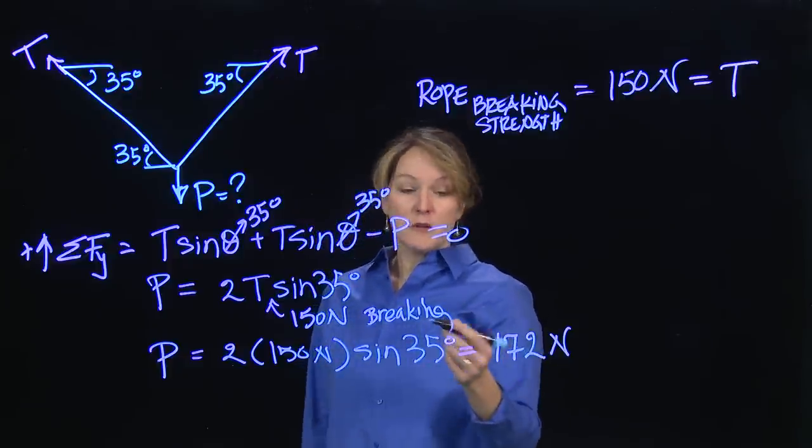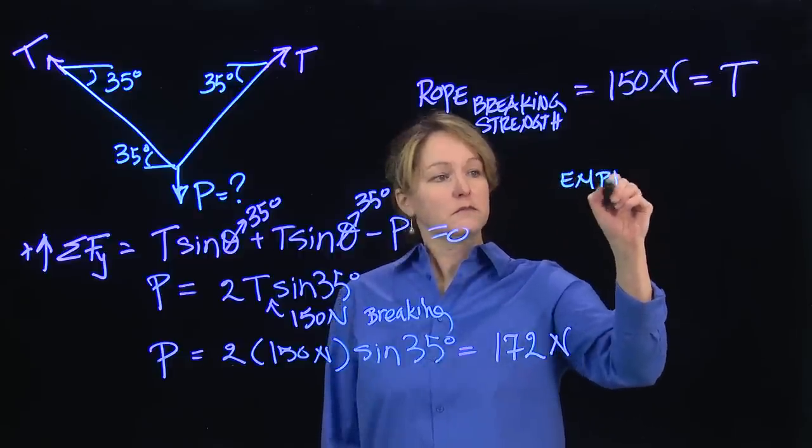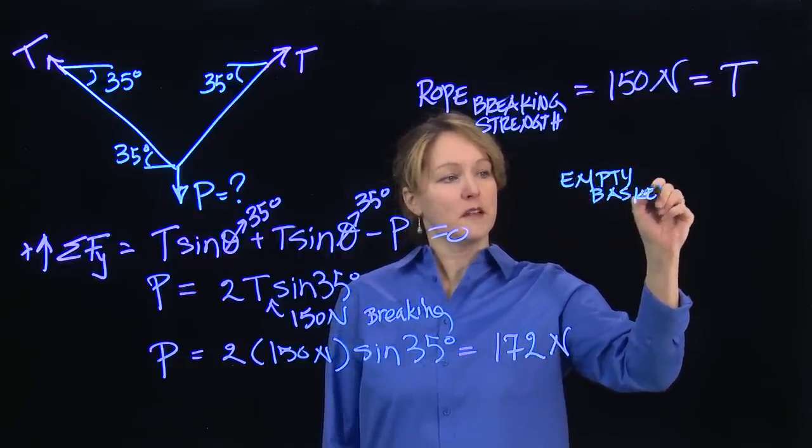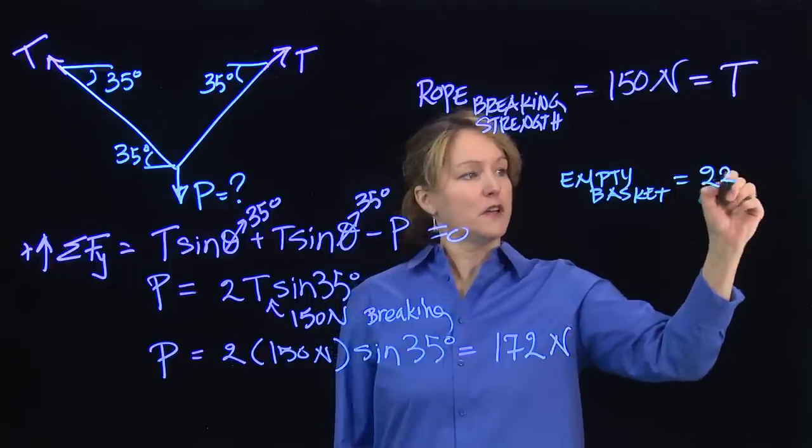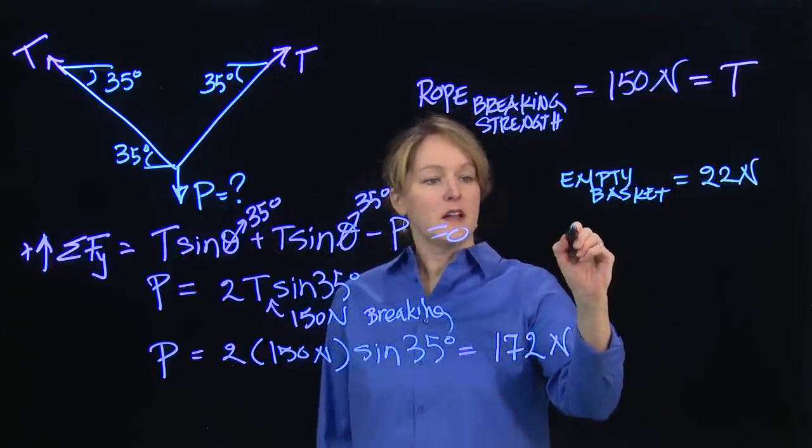Before I figure out how many books we can put in the basket, I'm going to make an assumption that the empty basket weighs something. And I'm going to say it equals 22 Newtons. I did that so we got a nice round number on how many books.